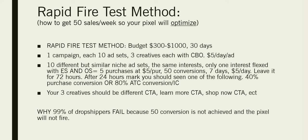If you have multiple parallel ad sets underneath the campaign and they all get, say, 10 sales, and you have 10 ad sets, then you'll be getting 100 sales under the purchase pixel. The purchase pixel will fire 100 times per week — that's enough to get your pixel optimized. Your cost per purchase should start going down and you'll start spinning the flywheel that is Facebook advertising.